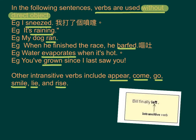In the following sentences, verbs are used without a direct object. For example: 'I sneezed.' 我打了个喷嚏。'It's raining. My dog ran. When he finished the race, he bathed.' 当他完成比赛，他就洗澡了。'Water evaporates when it's hot.' 水热的时候就会蒸发。'You have grown since I last saw you.' 我自从上次见到你，你已经长大了。Other intransitive verbs include: appear, come, go, smile, lie, and rise.